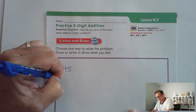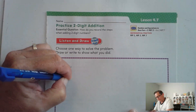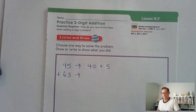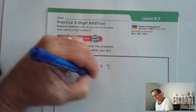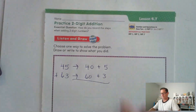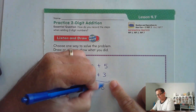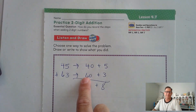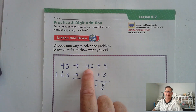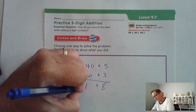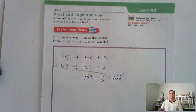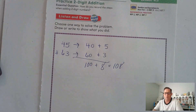One way we could do it: using the break-apart method, we could say 40 plus 5 and 60 plus 3. Add the ones, we get 8 ones. Add the tens: 40 plus 60 equals 100. Put it back together: 108. So that's one way we could have done it.